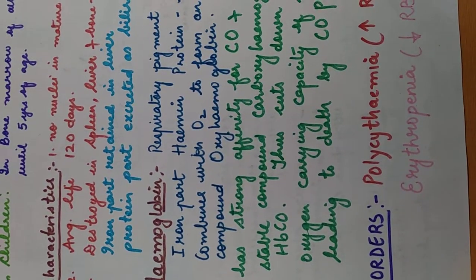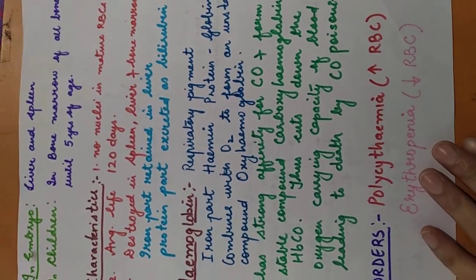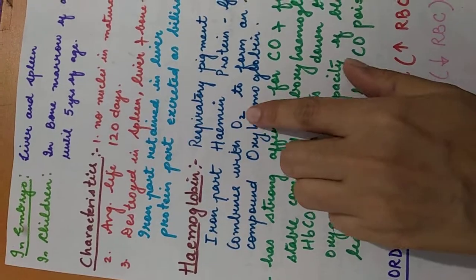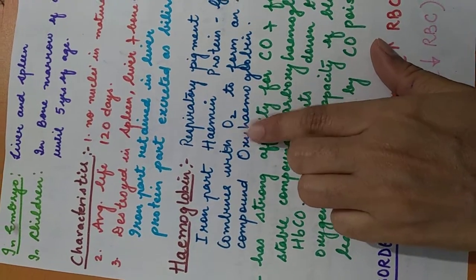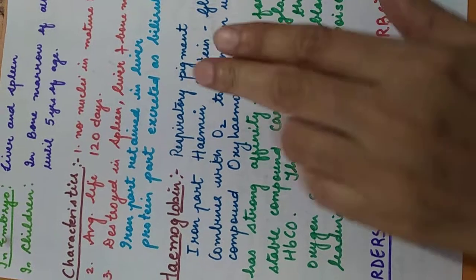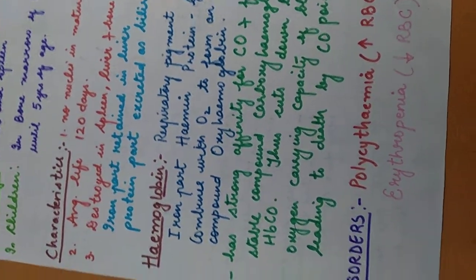And now we know that hemoglobin combines with oxygen to form an unstable compound, which is known as oxyhemoglobin. It then goes to the tissues and where they dissociate to give the oxygen to the tissues.